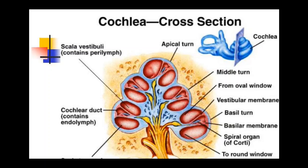The cochlea is in the form of a snail-like spiral so that a longer cochlea is able to fit inside an enclosed space. It is about 9 mm wide at the base and 5 mm high. It winds around a section of spongy bone called the modiolus, which is shaped like a screw whose threads form a spiral platform that supports the cochlea, which is fleshy and unable to support itself.